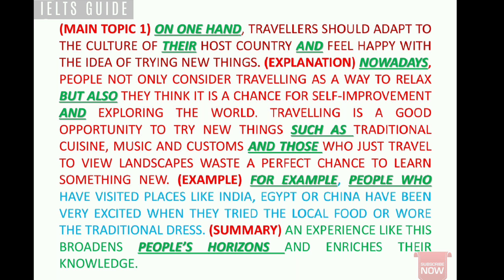Watch my videos on writing task examples to get a good idea of these things. All these words connect ideas and support main ideas — they are so important for getting a high band score in coherence and cohesion. In these examples, my essay flows well: the first sentence shows the main idea, the second shows explanation, the third shows an example, and the fourth is the summary.